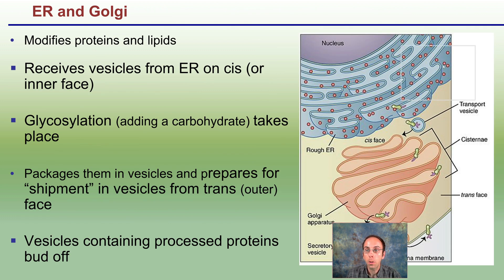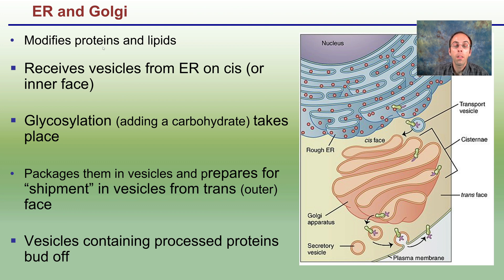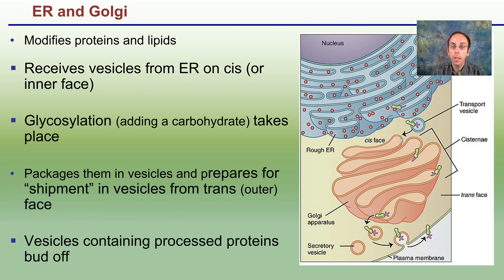The ER and the Golgi are two areas where we'll spend some time. This involves modification of proteins and lipids. Here's our nucleus, our rough ER, and then our Golgi. The Golgi is going to receive transport vesicles from the rough ER at the cis, or inner, face. Carbohydrates are then added, and the vesicles go through packaging and processing in preparation for shipment out through the trans, or outer, face.